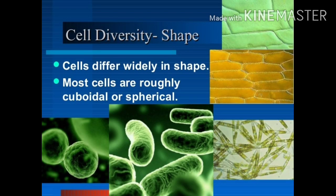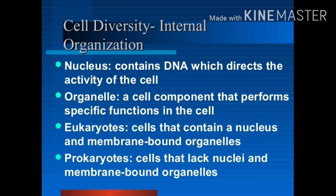If we look at cell diversity on the basis of shape, cells differ in shape. Most cells are roughly cuboidal or spherical in shape. Most of the time, the most common type of cell we observe is a cuboidal or spherical cell. So in cell diversity, we have seen size and shape — spherical and cuboidal shapes.